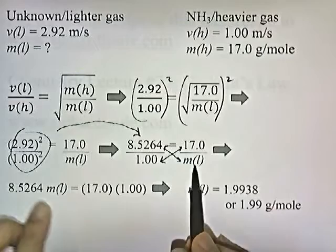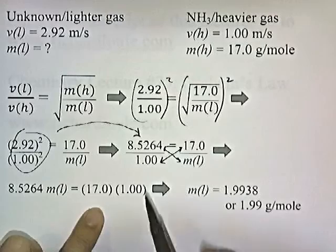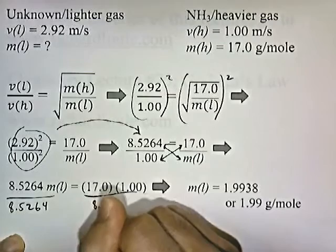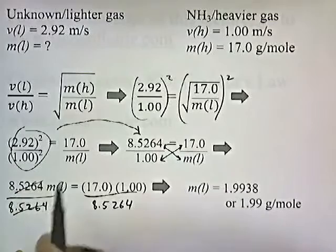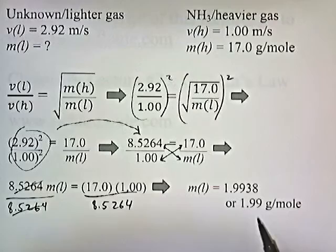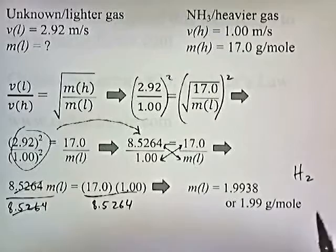8.5264 times ML equals 17 times 1. And then, to solve for ML, what we do is we'll divide both sides by 8.5264. That'll cancel. ML equals 17 times 1 divided by 8.5264. ML equals 1.9938, or 1.99 grams per mole. And this is very close to the molar mass of hydrogen gas. So, it's likely that our unknown gas is hydrogen.